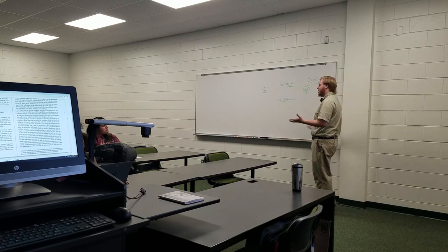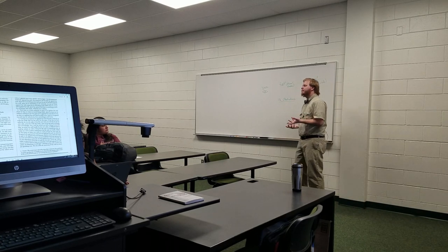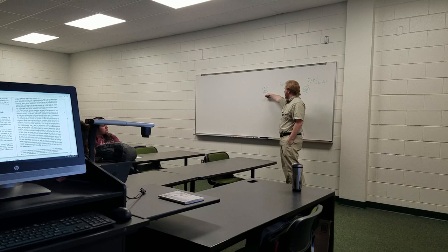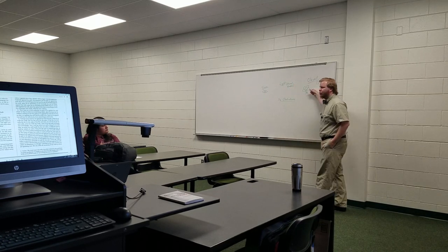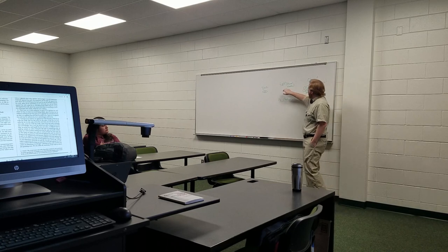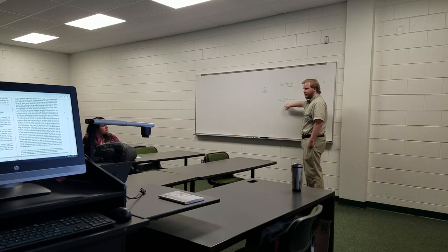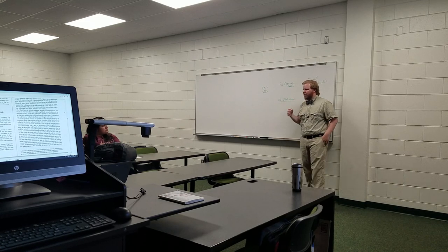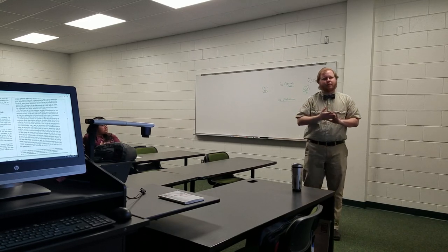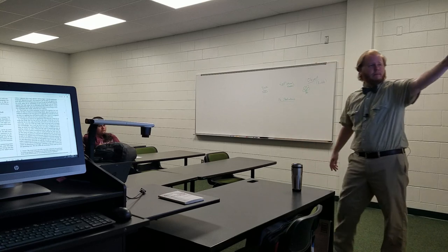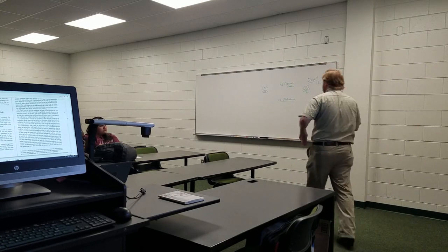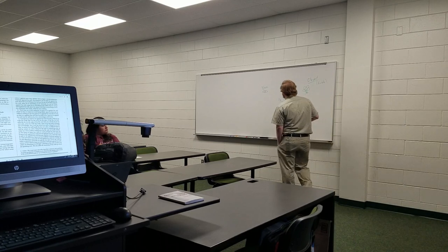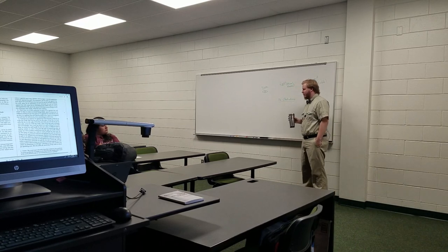Anselm points out that you need all four of these things with regard to any power or ability that you have or anything that you can do. For vision, these are the four things we need. In order to be able to will something, we need something analogous: the ability to will, something worth willing, something that allows for it, and something that does not prevent it.